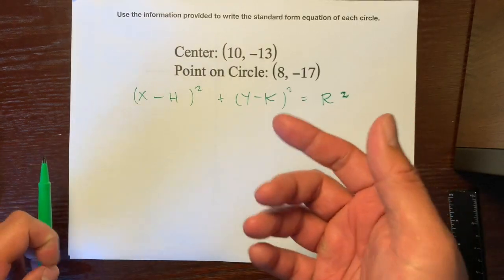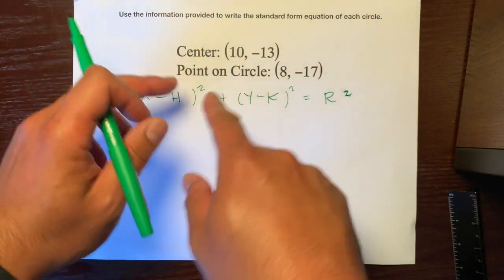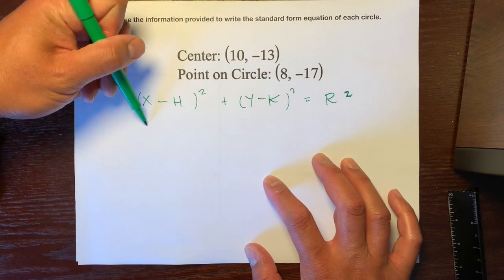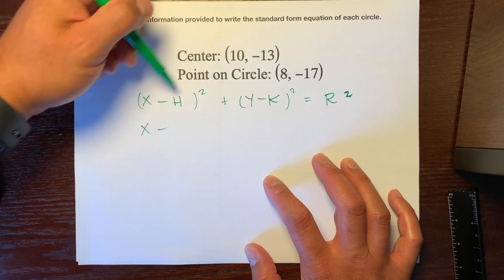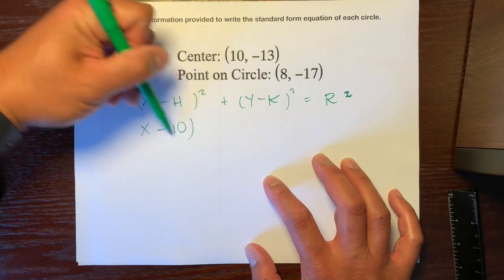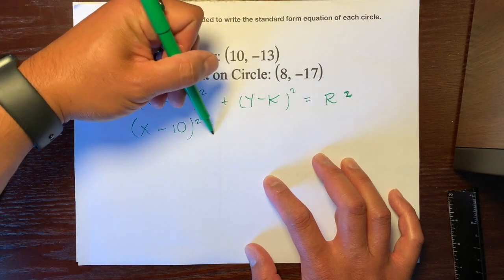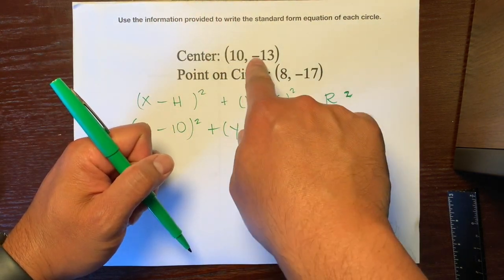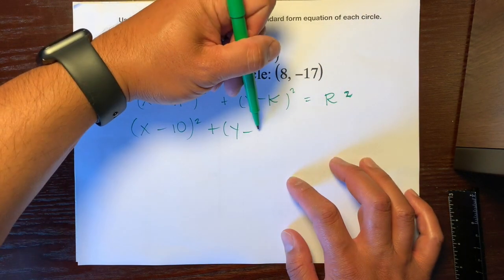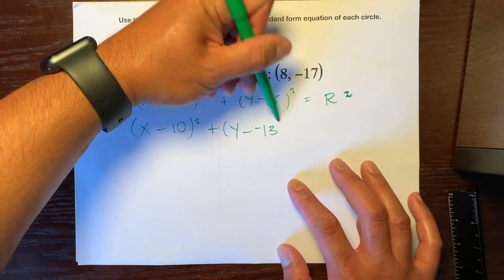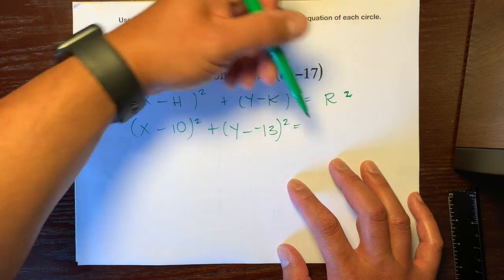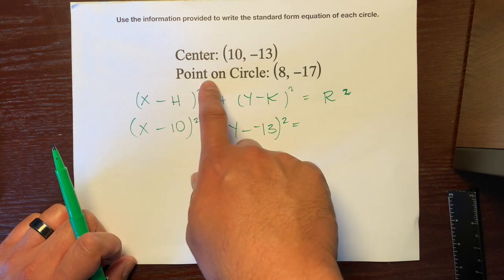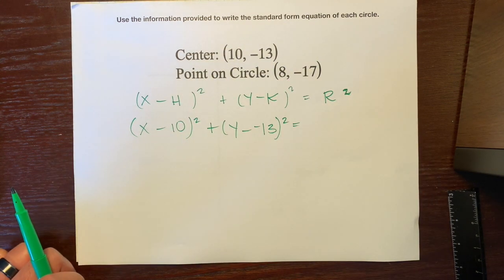So this h and k are the center, and this r, when we're talking about a circle, is obviously the radius. We have one part of this equation so far — we have the center — so let's plug these numbers in. We have (x minus 10) squared plus (y minus negative 13) squared equals... we don't know what the radius is yet; we just know the point on the circle is (8, -17).